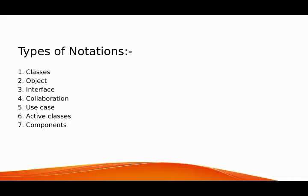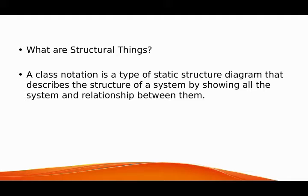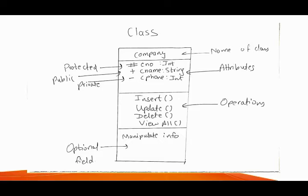Types of notations include: classes, objects, interface, collaboration, use case, active classes, and components. Structural things — graphical notations used in structural things are most widely used in UML. A class notation is a type of static structure diagram that describes the structure of a system by showing all the system's classes and relationships between them. Here in the class diagram, the name of the class is 'Company,' with attributes: company number (integer), company name (string), and company phone (integer).